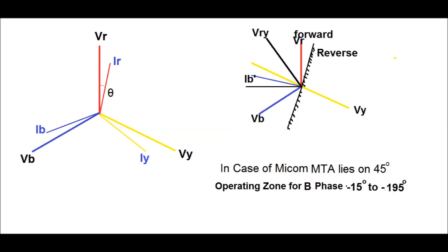Similarly, for a fault at blue phase, the reference voltage taken is VRY, that is the voltage between red phase and yellow phase. Since the maximum torque angle lies at 45 degrees, IB' leads by 45 degrees from VRY. Therefore, the operating zone for B phase lies between minus 15 degrees to minus 195 degrees. This zone is treated as a forward zone, that is the directional forward zone for relay fault at B phase. Beyond this zone, the relay will act in the reverse zone or blind zone — that is, beyond this zone, the relay will not sense any fault.